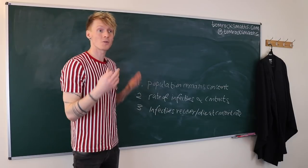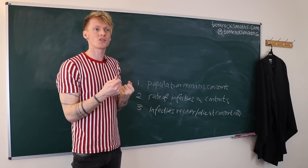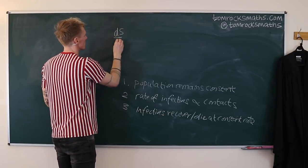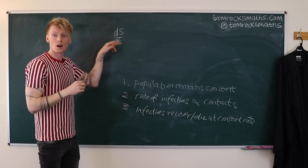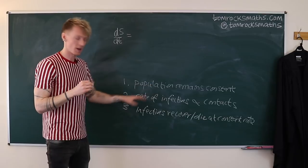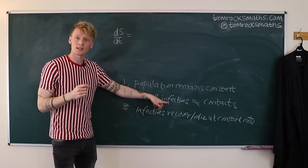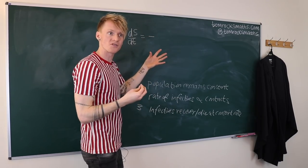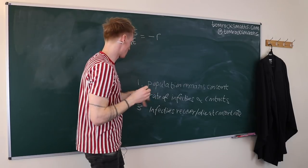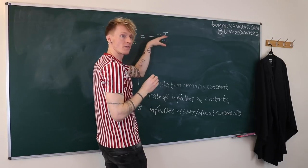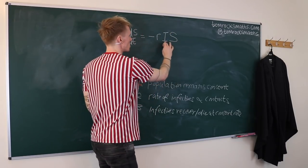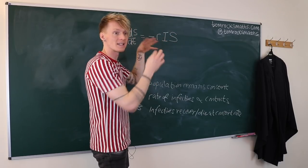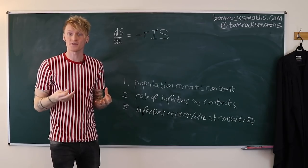Now that we've made our assumptions, we can write down the governing equations for S, I, and R. Starting with the susceptibles: the rate of change of S over time is going to decrease as people become infective. So dS/dt equals minus r·I·S, where r is the rate of contact or transmission, and the product I·S symbolizes contact between infectives and susceptibles.